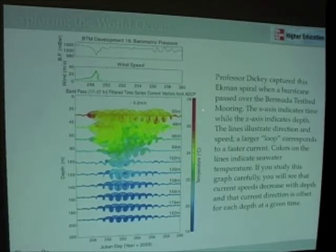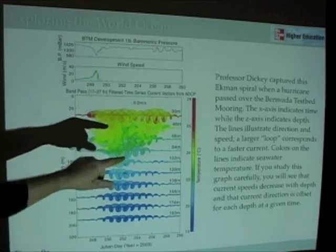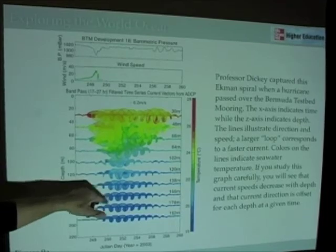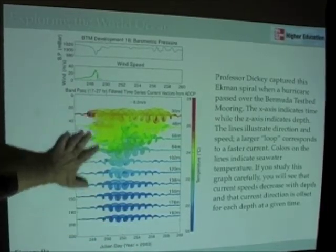At each depth was a current meter. So each depth shown here—30, 48, 66, on down to 119 meters—were current meters. There were also temperature sensors. The colors here refer to the temperature. The whirls here are just like the vectors we saw previously, referring to water directions at each one of these depths.